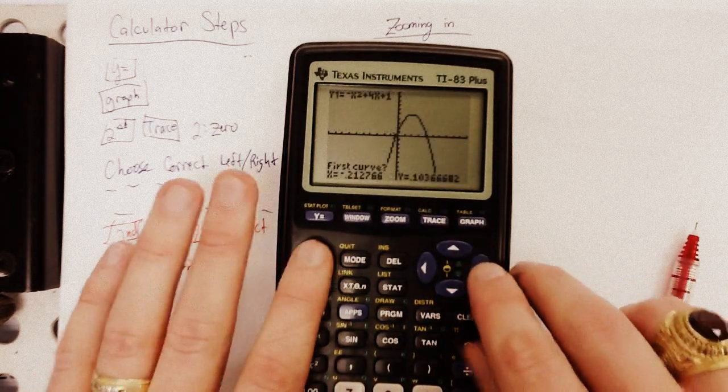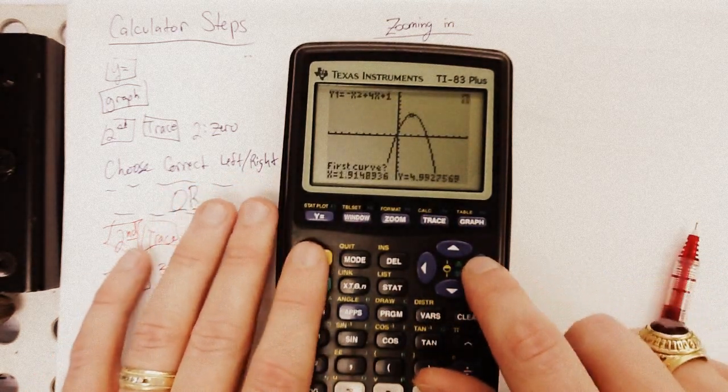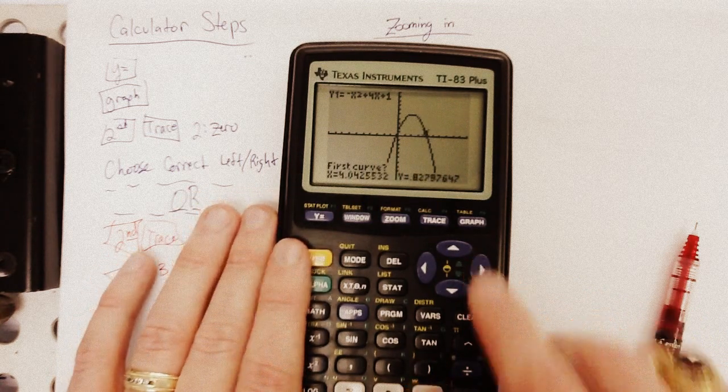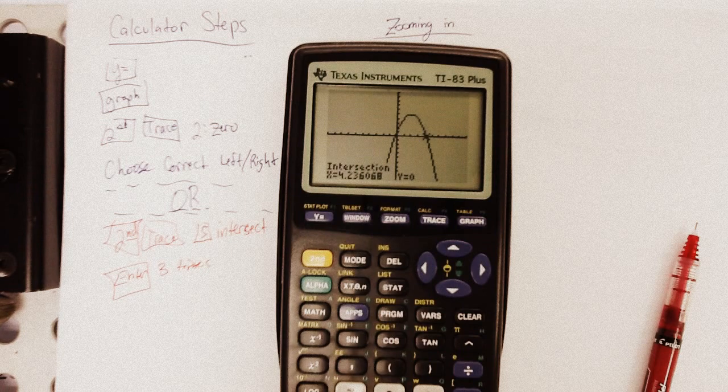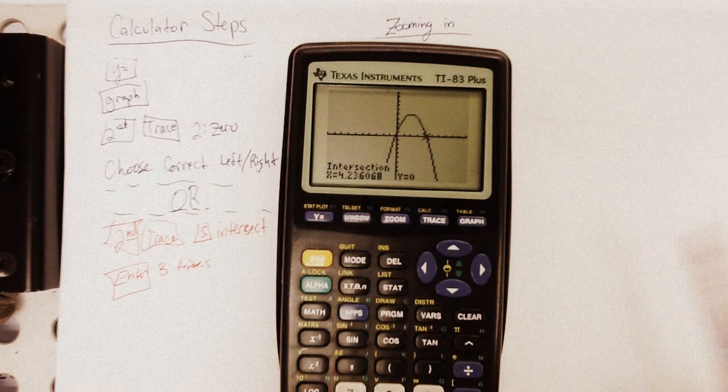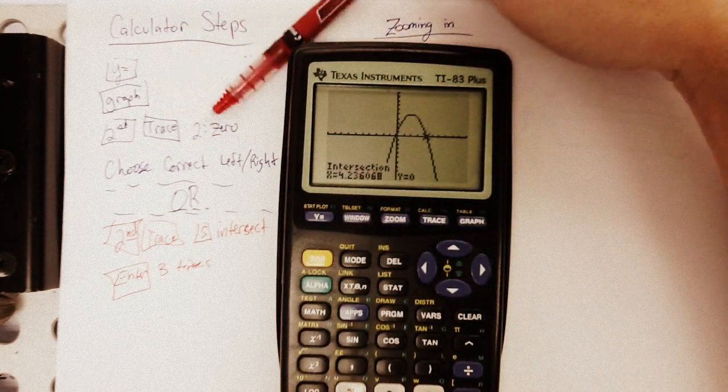All right. So, we hit enter three times, and there we go. Negative 2.36. To get the other one, second trace intersect. Remember, second and over, it's going to go a lot faster. Get it pretty close. There, three times. Most people prefer this method. It's up to you. But, again, most people prefer second trace intersect over the first thing I told you with the zero. Because you've got to get that left bound and right bound correct, and most people have trouble with that.